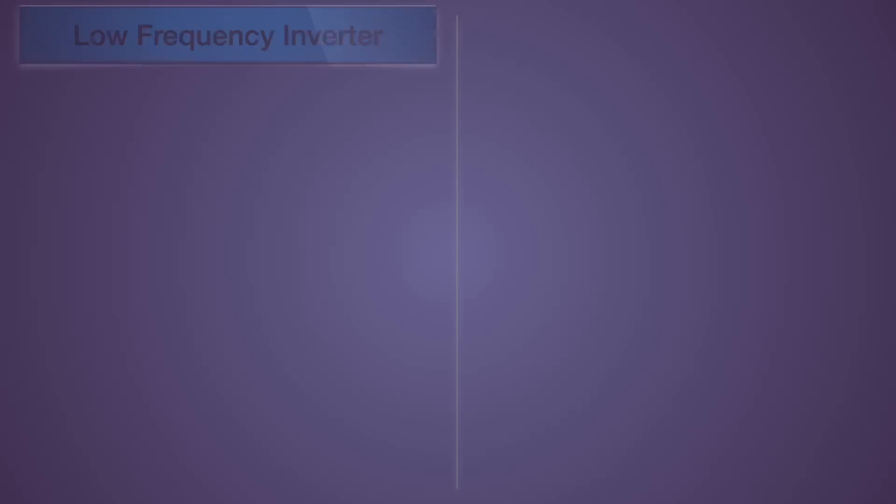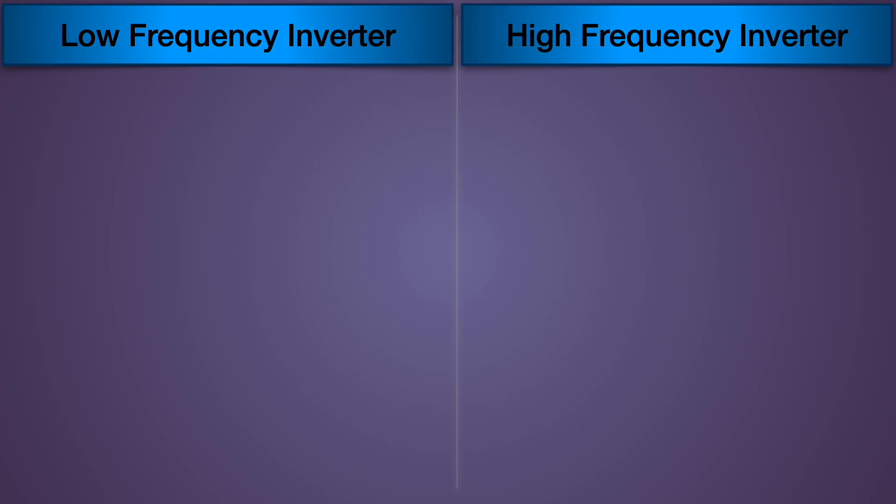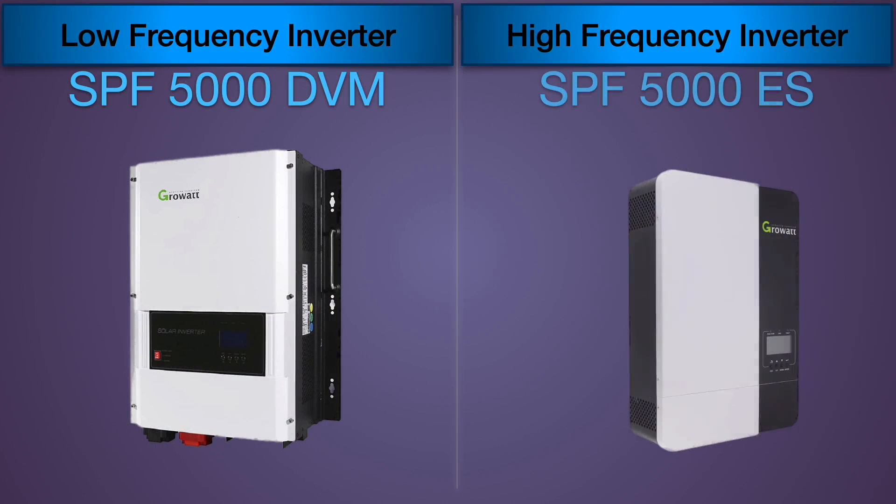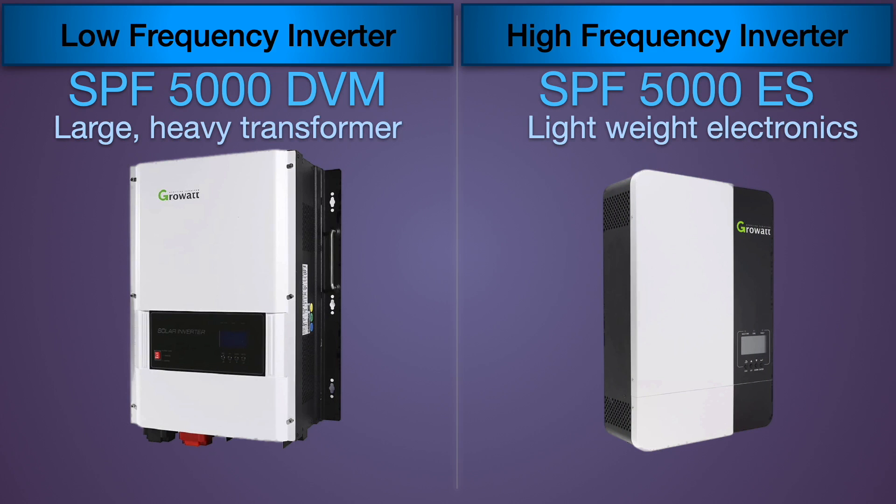We're going to compare low frequency and high frequency inverters. We're going to use Growatt 5,000 watt inverters for both of these. So we're comparing the 5,000 watt DVM to the 5,000 watt ES.